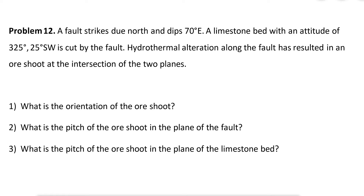In this problem we have two planar elements: one is the fault plane and the other is the limestone bed. At the intersection of these two planar features we have hydrothermal alteration, which we are interested in. We need to find the orientation of the orshoot, which is the intersection of these two planes. On the stereonet we plot two planes — the fault and the limestone — and the intersection gives the orientation of the orshoot. We can find the trend and plunge, and that's the answer for part one.